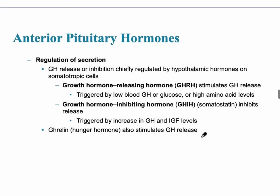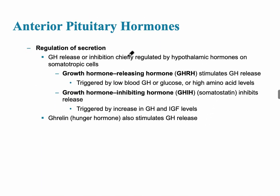The regulation for secretion of growth hormone involves two hormones released from the hypothalamus. Growth hormone releasing hormone stimulates growth hormone to be released; it's triggered when there is low blood growth hormone, low glucose, or high amino acid levels. The opposing hormone is growth hormone inhibiting hormone, which blocks the release of growth hormone from the anterior pituitary gland. That would be triggered when there's too much growth hormone or too much insulin-like growth factor.